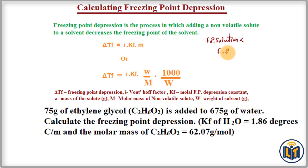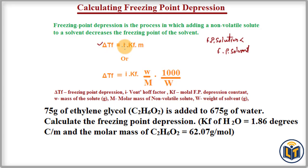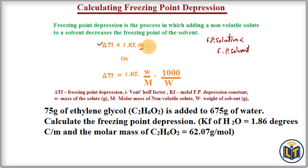Here is the formula to calculate freezing point depression: ΔTf = i × Kf × m, where ΔTf is the freezing point depression, i is the van't Hoff factor — the number of dissociated ions in solution — Kf is the freezing point depression constant, and m is the molality. Molality is equal to moles of solute divided by mass of solvent in kilograms.